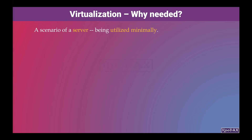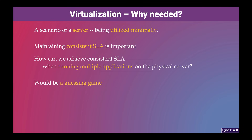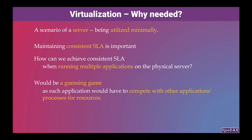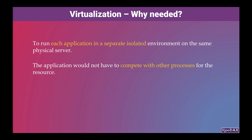Let's take another use case to understand virtualization. As we know, maintaining consistent SLA — service-level agreement — is very important in critical applications. How can we achieve consistent SLA when running multiple applications on a single physical server? Maintaining consistent SLA would be a guessing game in this scenario, as each application would have to compete with other applications' processes for resources. One way to handle this is to run each application in a separate, isolated environment on the same physical server, so the application would not have to compete with other processes. Running applications in their own separate environment would help in providing consistent SLA.